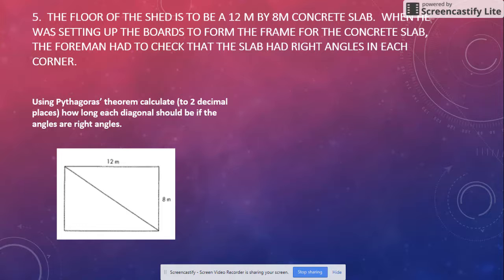Number five. Using Pythagoras, calculate to two decimal places how long each diagonal should be if the angles are right angles. The foreman checked that the slab had right angles in each corner. Use Pythagoras: a² + b² = c². This would be a squared, b squared, and we're going to find out what that is, c squared. So we've got 12² + 8² = c².